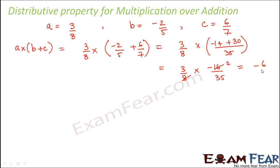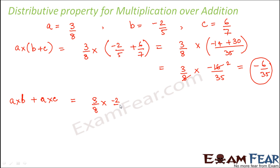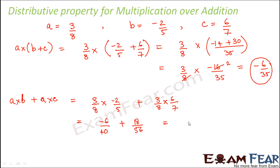Simplifying 3/8 into −16/35 gives −6/35. Now let us calculate the right-hand side, a into b plus a into c: that is 3/8 into −2/5 plus 3/8 into 6/7. This gives −6/40 plus 18/56, which simplifies to −3/20 plus 9/28. Taking the LCM gives −24/140, which is −6/35.